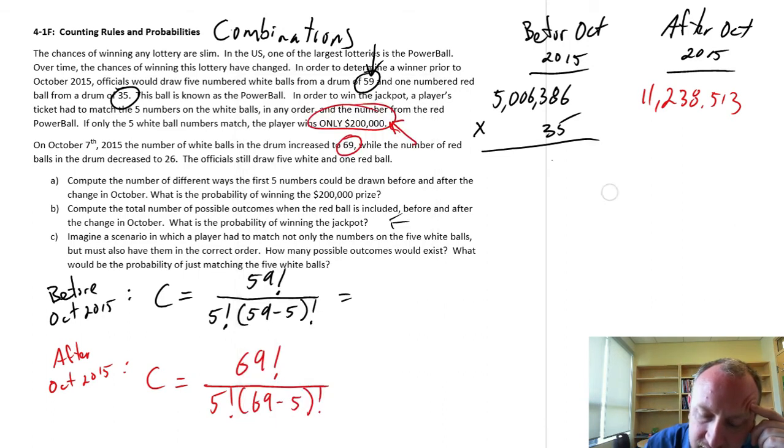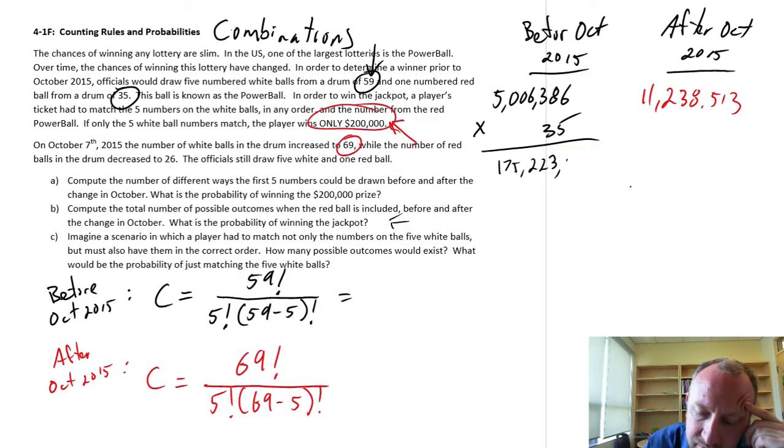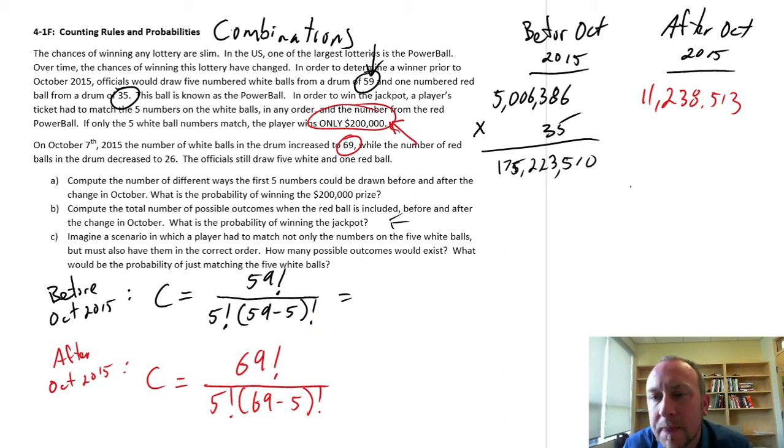175 million, 223,510. So your odds of winning the lottery, the jackpot, before October 2015, would be 1 in 175 million.